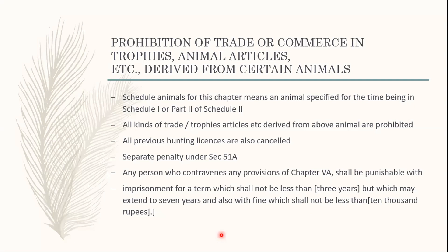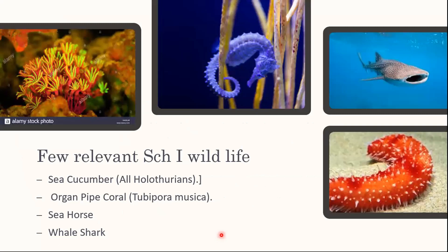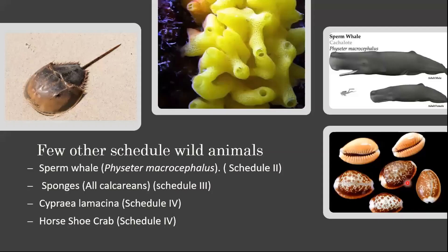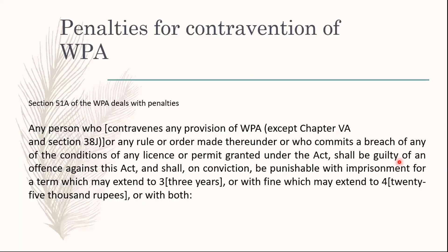Some animals under Schedule 1, which has the maximum protection, include: orange white coral, sea horse, whale shark, and sea cucumber. Other schedules include animals like horseshoe crab, sponges, sperm whale, and sea cypher. Regarding penalties for contravention of WPA under Section 51A: the general penalty is imprisonment up to 3 years or fine — for general offenses, a fine is mostly imposed. But for Schedule 1 and Part 2 Schedule 2 violations, especially inside a national park or sanctuary, imprisonment is a minimum of 3 years with no fine clause.